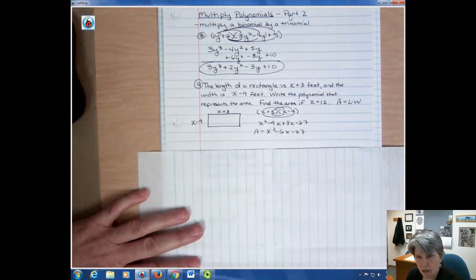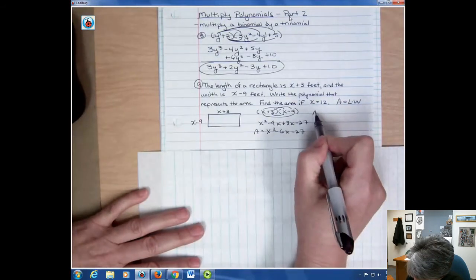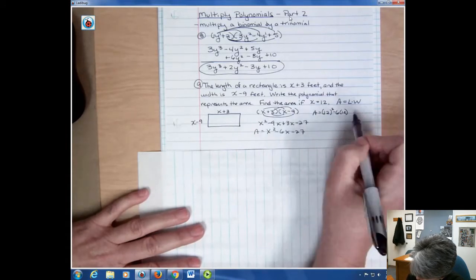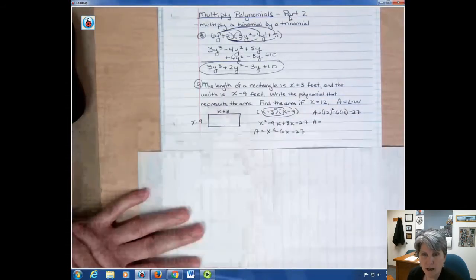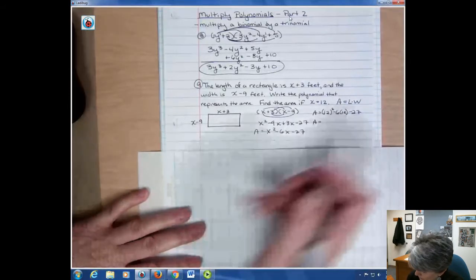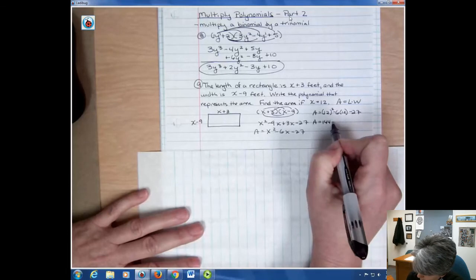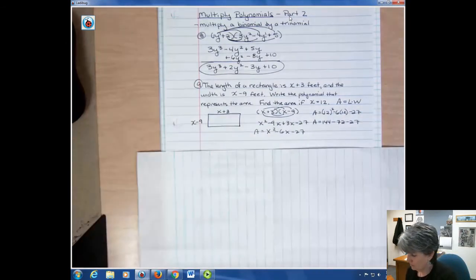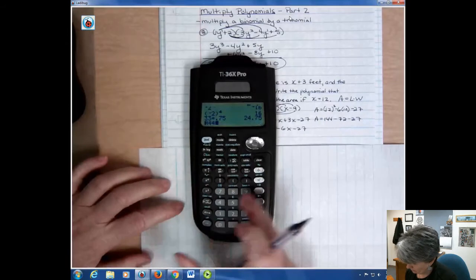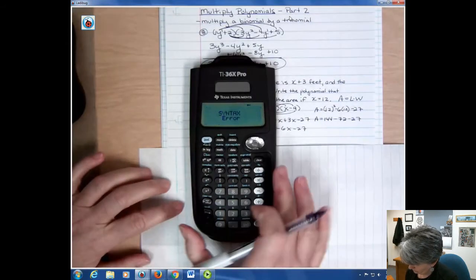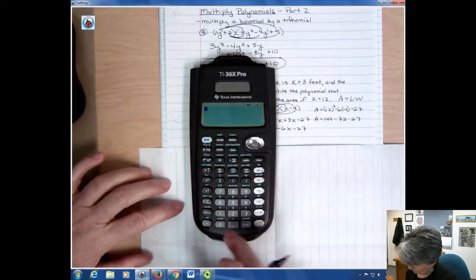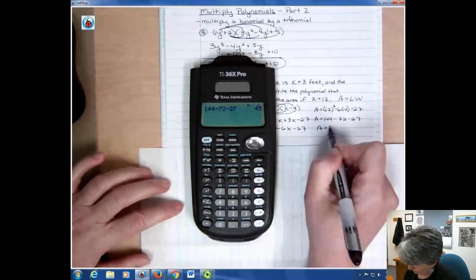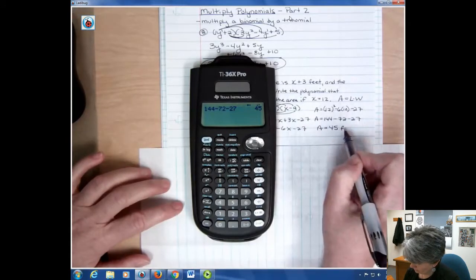And then the second part says what would be the area if x was 12. So we want to go back and say, well, area equals 12 squared minus 6 times 12 minus 27. And we would plug that in for, if we know what x is, we would replace x with 12 and then we simplify that. So we have 144 minus 72 minus 27. Sometimes my brain is a little slow. So it's 45. So the area equals 45. And it's feet. So it would be feet squared.